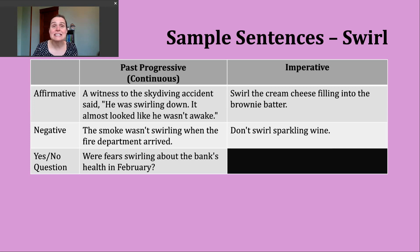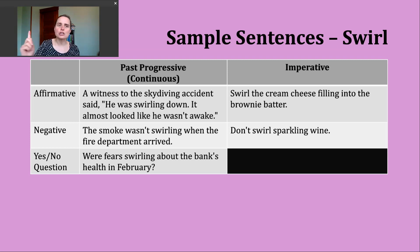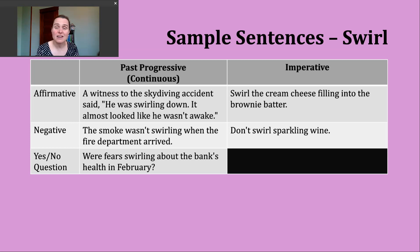Here's an example: a witness to the skydiving accident said he was swirling down — it almost looked like he wasn't awake. So this was a quotation describing what the witness saw, painting a picture of someone making a circular, spiraling or twisting motion as they were unfortunately falling to the ground.